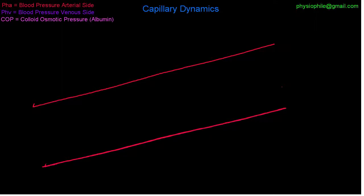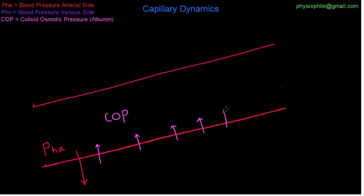Last time we looked at the normal pressures in the capillary, and today we're going to look at what happens when there are problems. In our last visit we looked at the hydrostatic pressure on the arterial side, which is forcing fluid out, and the colloid osmotic pressure, which is pulling fluid in and is pretty much the same throughout the capillary. Then we looked at the hydrostatic pressure on the venous side — the blood pressure — that is also pushing fluid out.